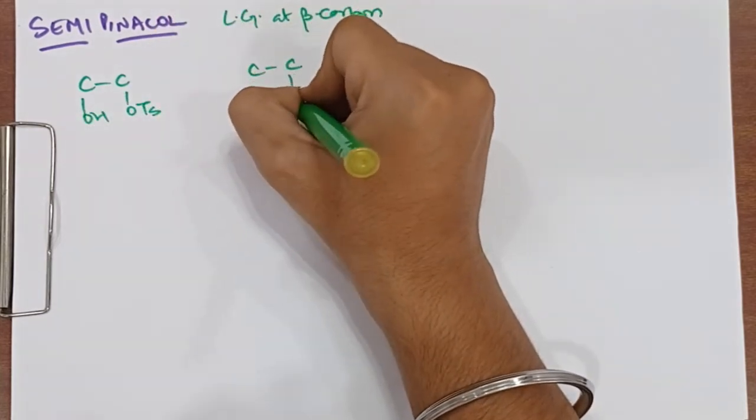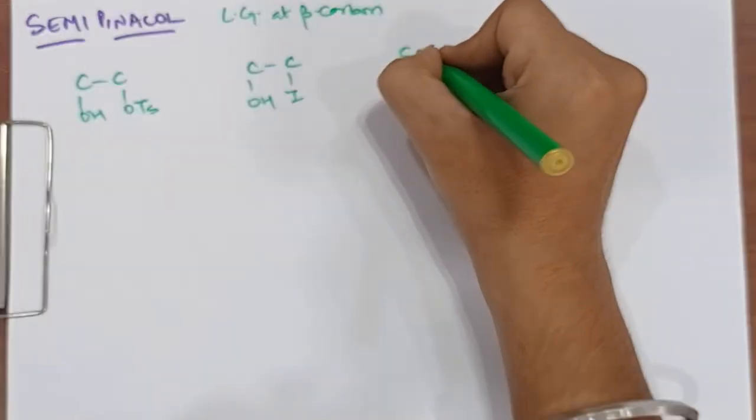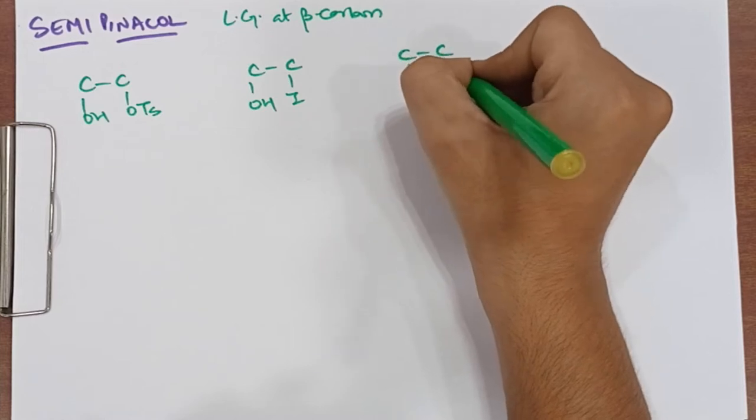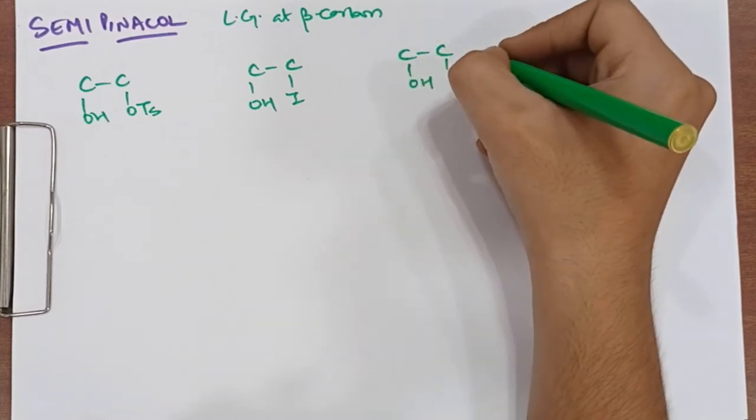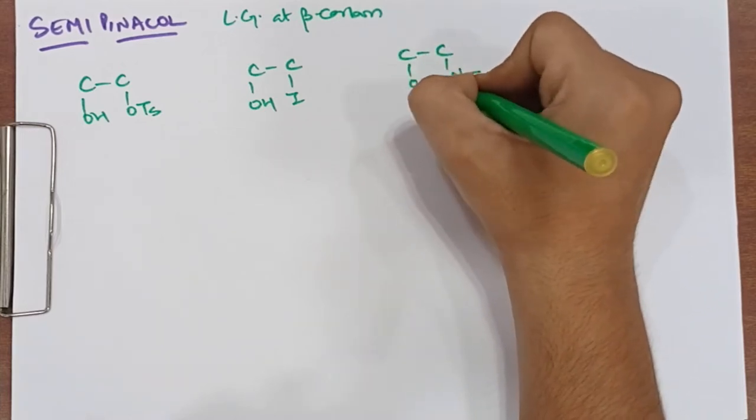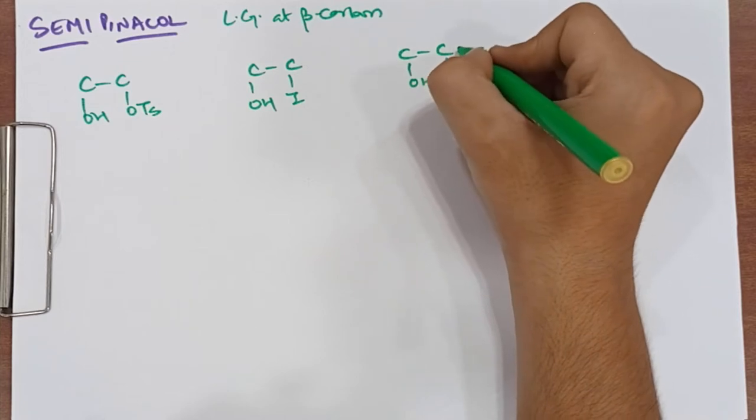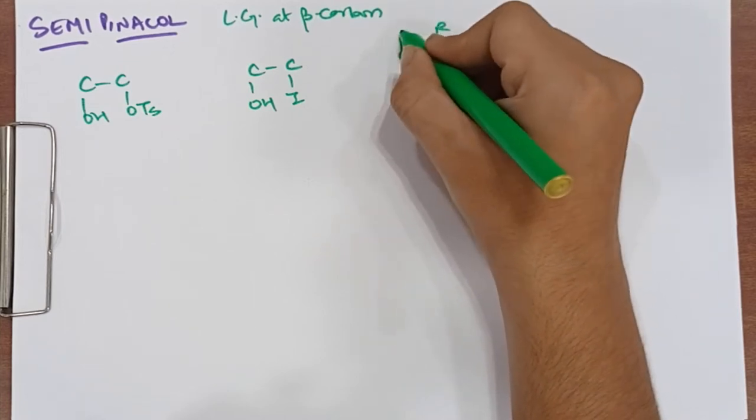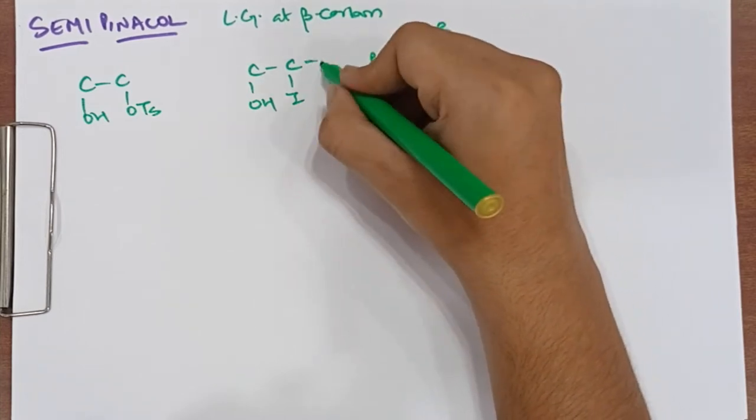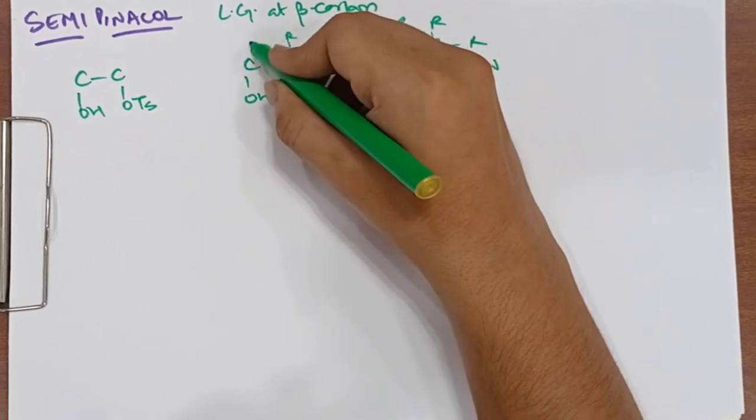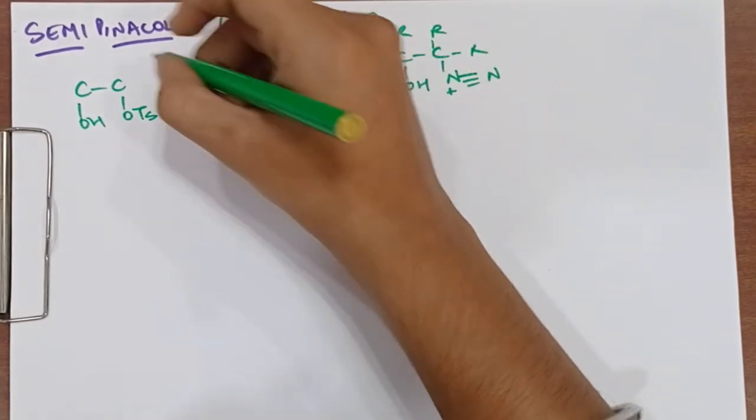We have groups like nitro group. These are three groups - if they have alcohol, then that are semi-pinacol. Here we have semi-pinacol.